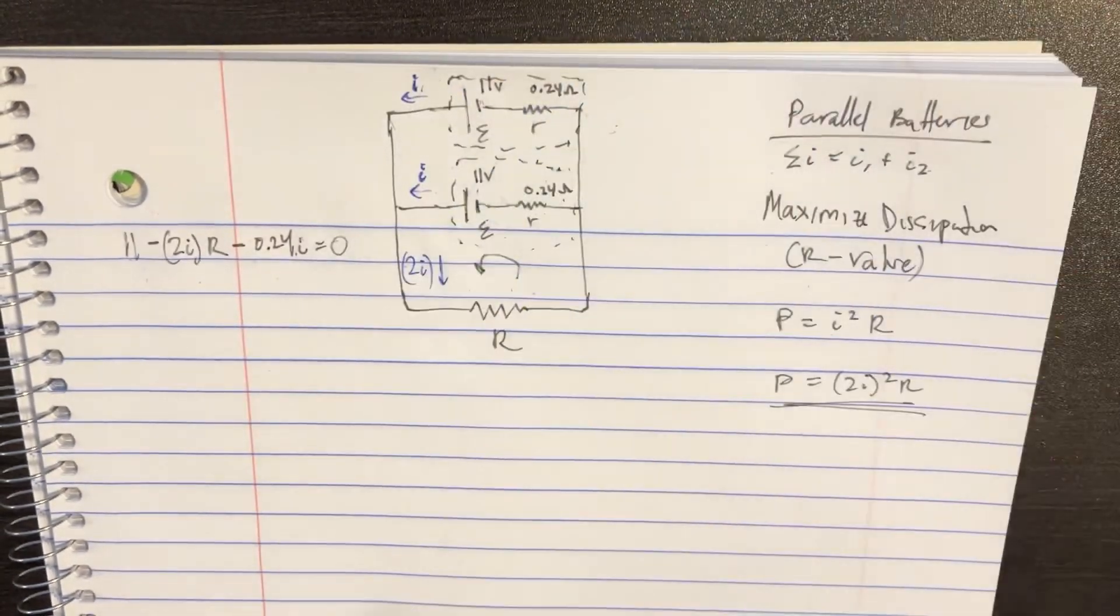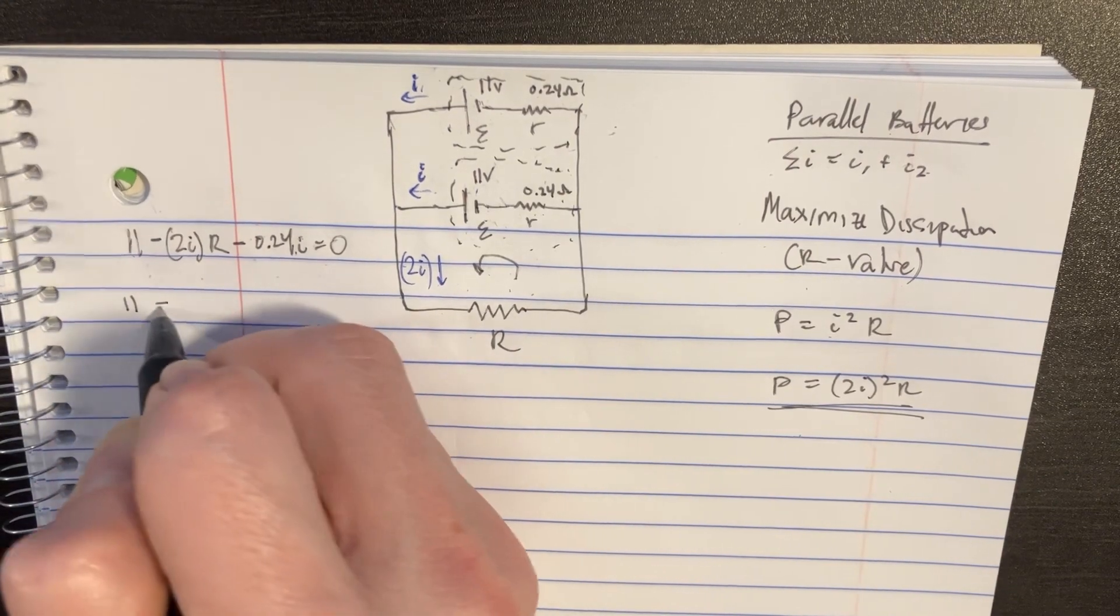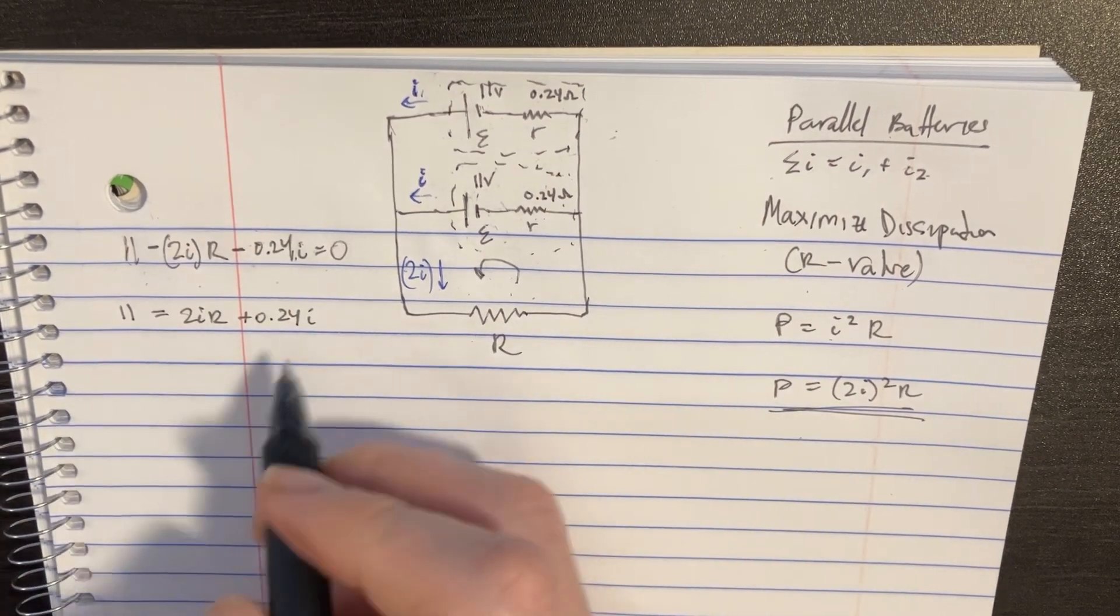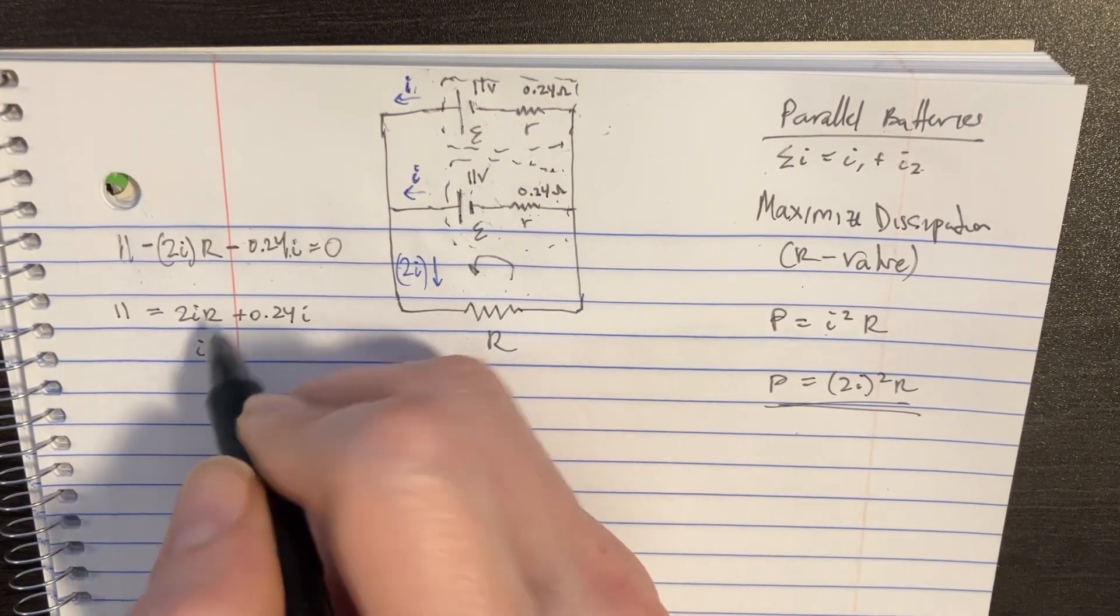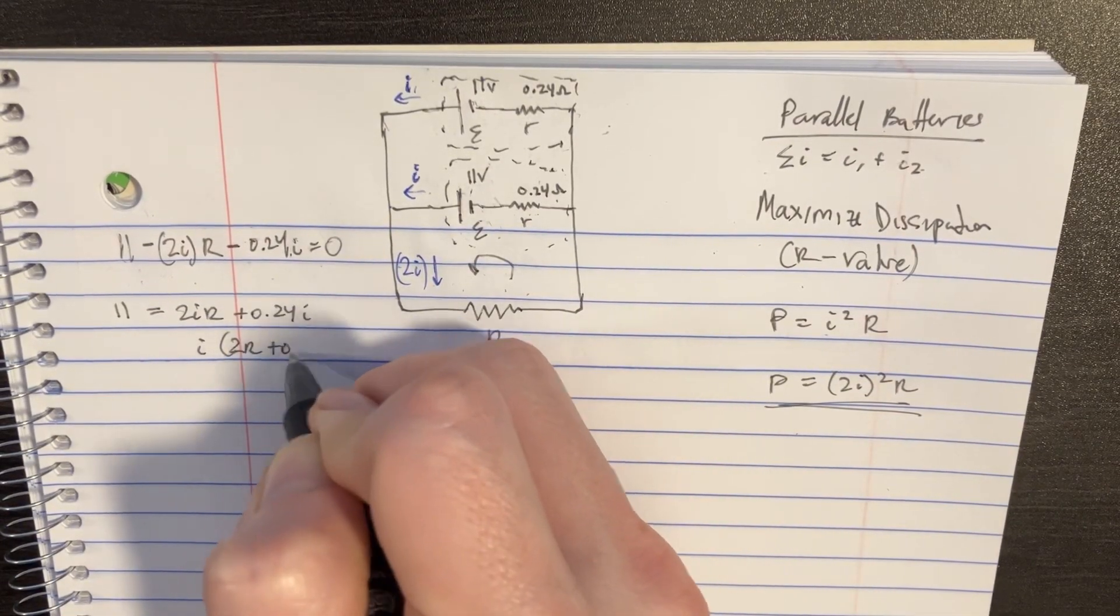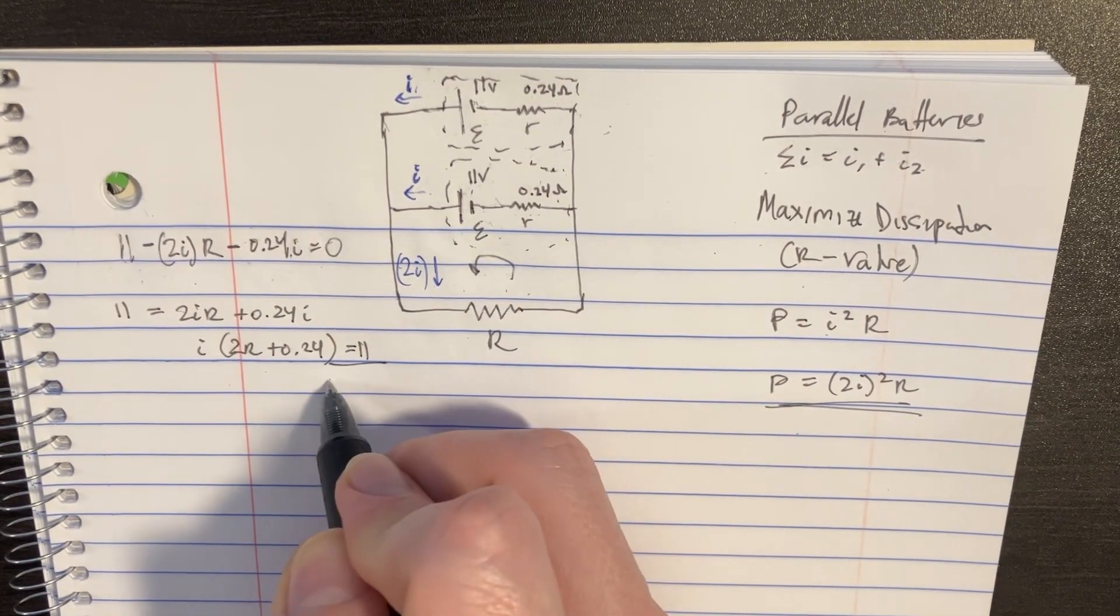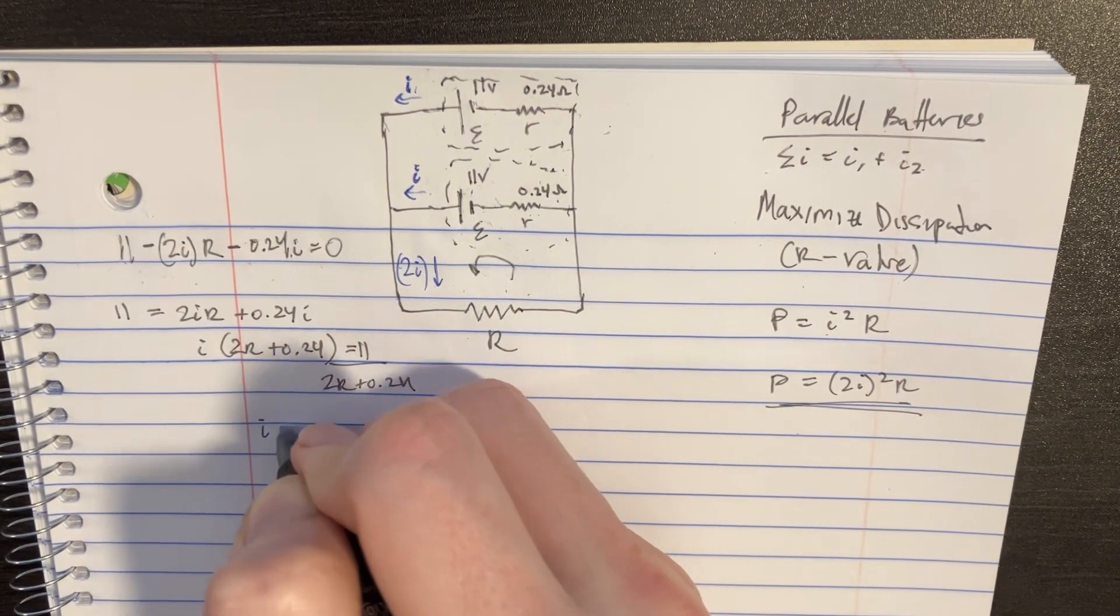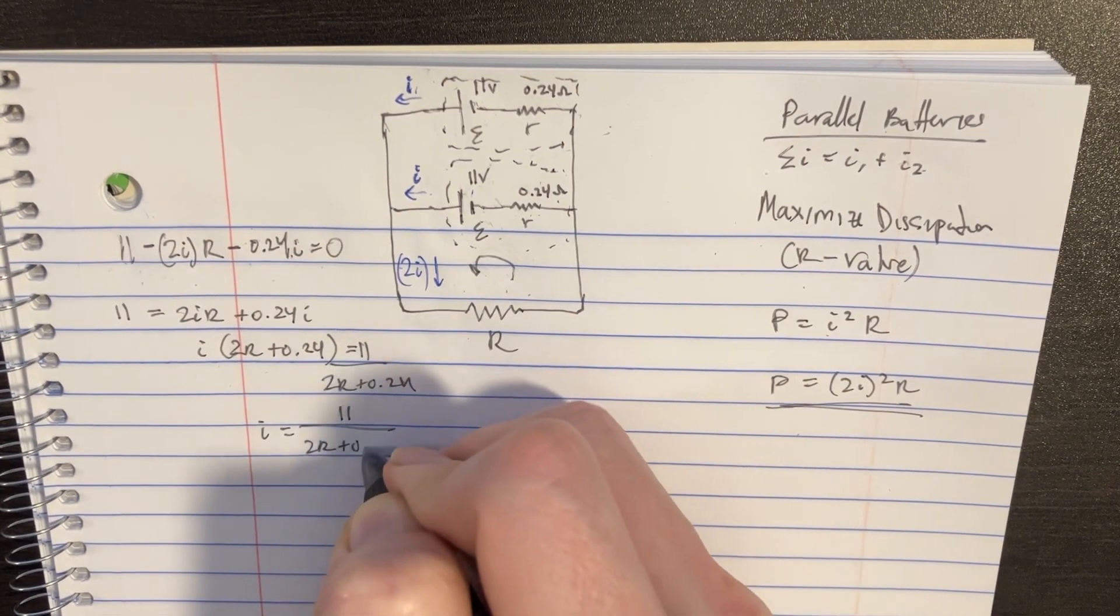So I set that equal to zero, but we can see that the i's can actually shift to the other side. So we'll get 11 equals 2ir plus 0.24i. Pull out the i's, we'll get i times 2r plus 0.24 is equal to 11, and then now you can divide this by 2r plus 0.24. You'll get i equals 11 divided by 2r plus 0.24.